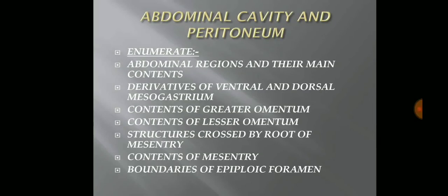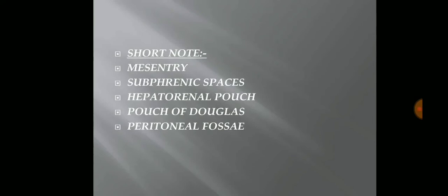Moving to the abdominal cavity and the peritoneum. The enumerate questions from this chapter are: abdominal regions and their main contents, derivatives of ventral and dorsal mesogastrium — this is important — contents of the greater omentum and contents of the lesser omentum — these two are also important. The structures crossed by the root of the mesentery is also important. Contents of mesentery and boundaries of epiploic foramen are lesser important. Short notes include: mesentery, subphrenic spaces, hepatorenal pouch, pouch of Douglas, and peritoneal fossa. These are lesser important, however, diagrams on these can be asked.